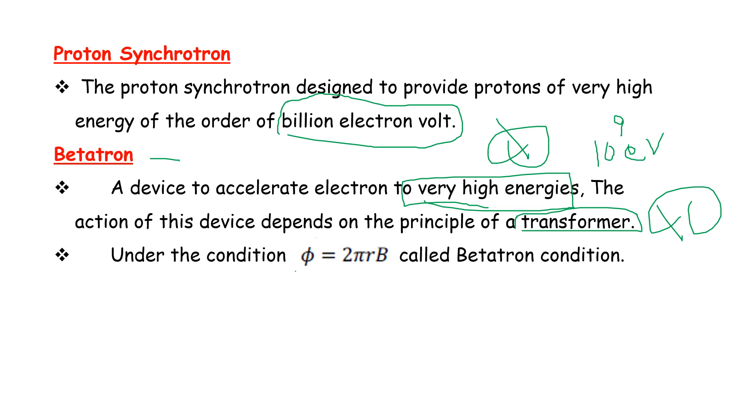Under the condition for betatron, the important relation is: π is equal to 2πrB. This is the betatron condition.